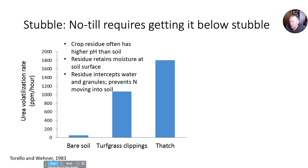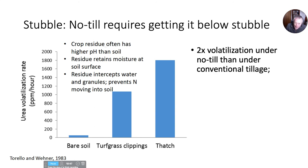If you do no-till, you've got to get it below the stubble. Residues on the surface, even if you try to water it in, will absorb a lot of the water, making it hard to move material into the soil. The residues have a higher pH, driving more volatilization. The residues also harbor the urease enzyme necessary for hydrolysis of urea, which then releases the ammonium, which is vulnerable to loss as ammonia. Just broadcasting urea on the surface will get twice the volatilization compared to conventional tillage.